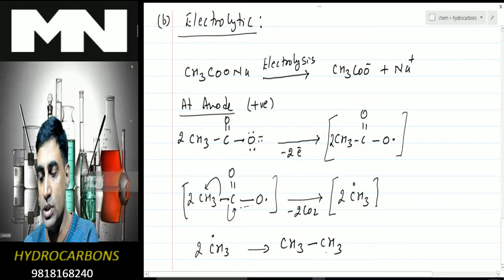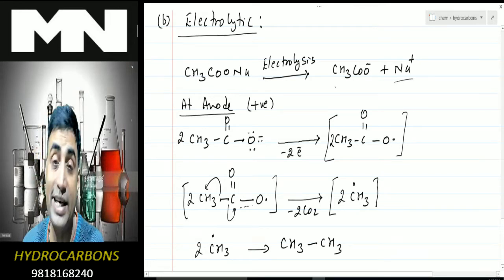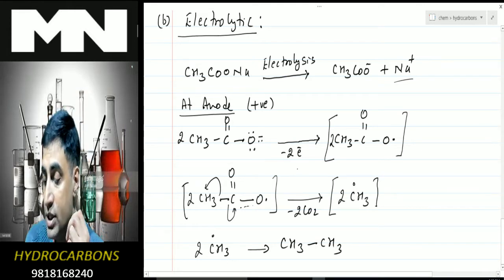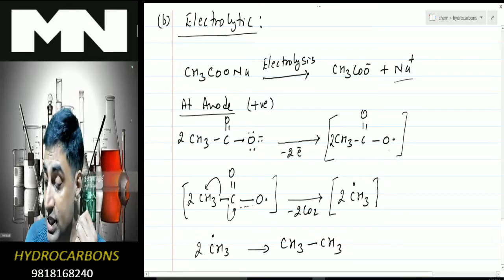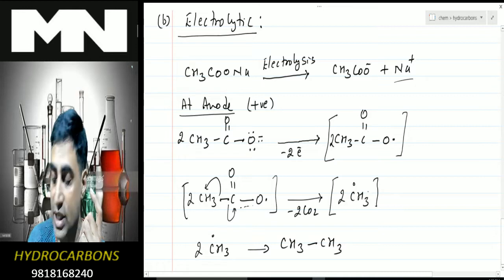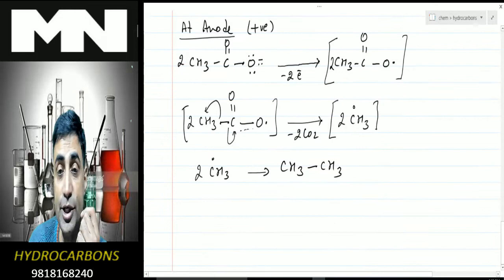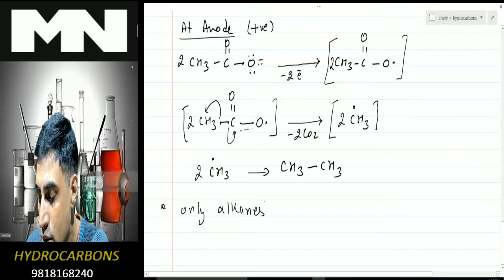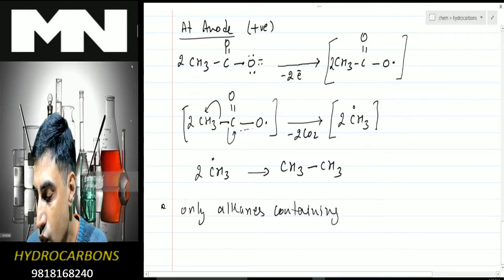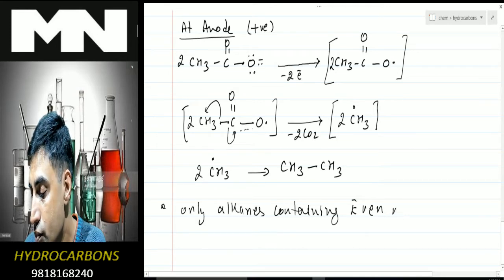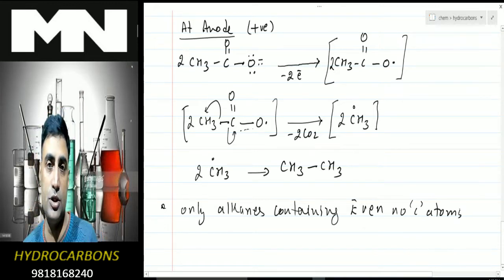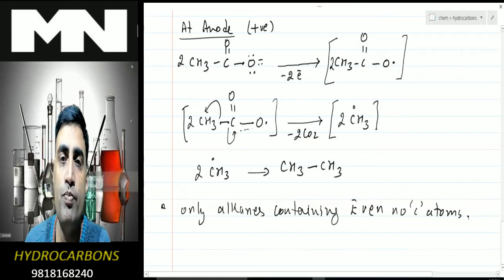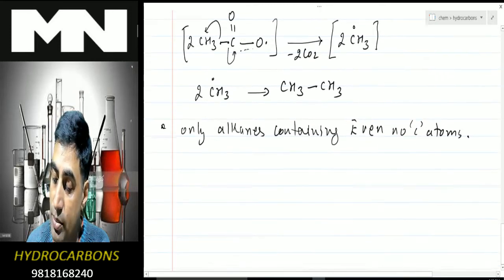This process is known as electrolytic decarboxylation (Kolbe's electrolysis). The limitation is very similar to Wurtz reaction: only alkanes containing an even number of carbon atoms can be prepared by this method, because here also we are multiplying by 2. So this is all about the methods of preparation of alkanes.